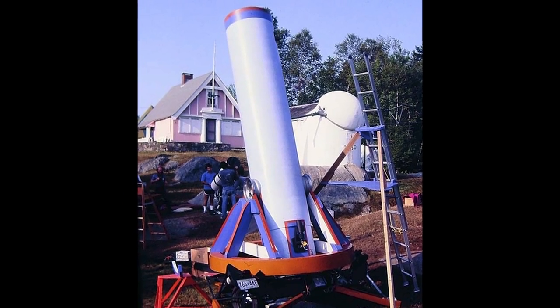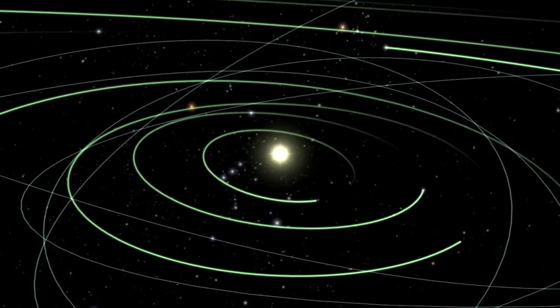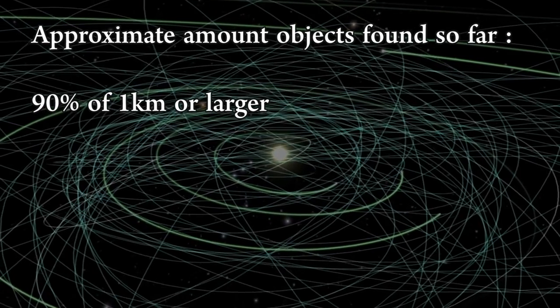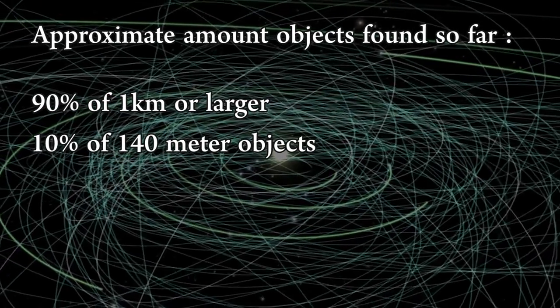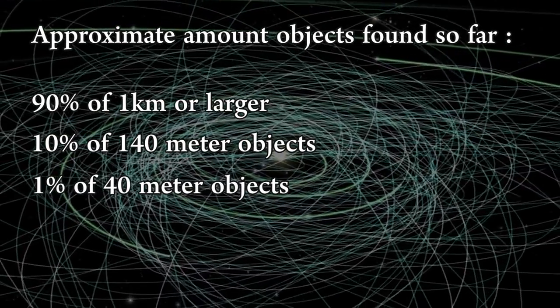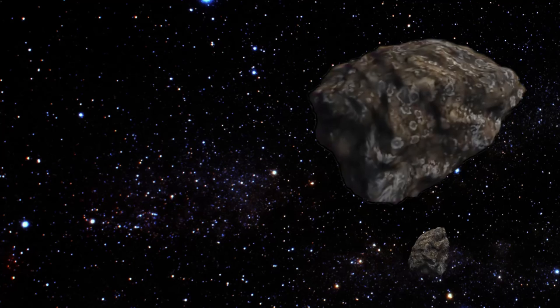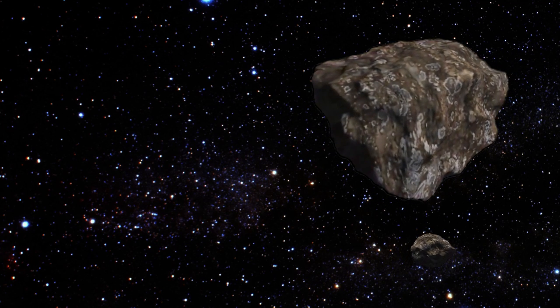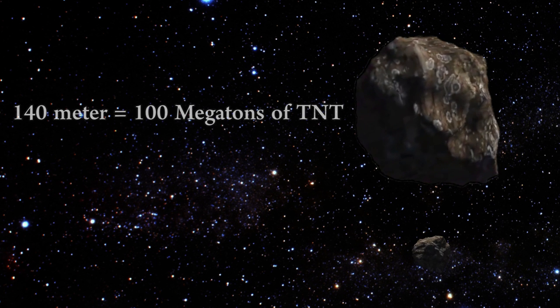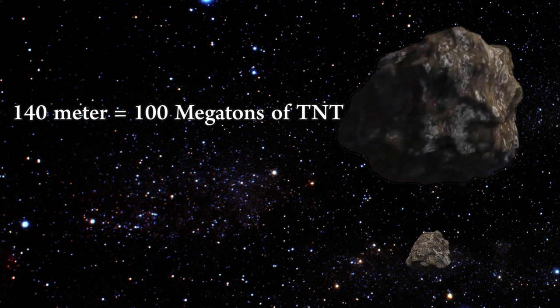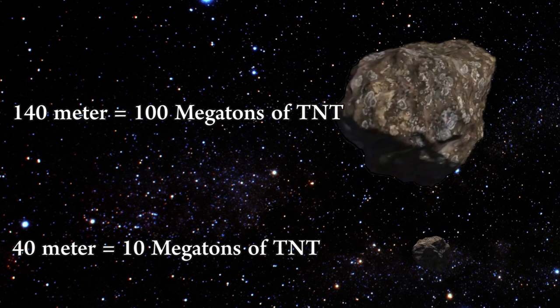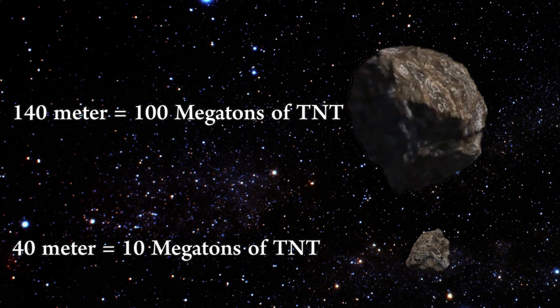So far we have discovered about 90% of the really big planet killers but only about 10% of the 140 meter ones and less than 1% of the 40 meter ones. The 140 meter size is chosen because that will be equivalent to a 100 megaton explosion if it were to hit the Earth and the 40 meter ones are equivalent to a 10 megaton city killer like the Tunguska object.